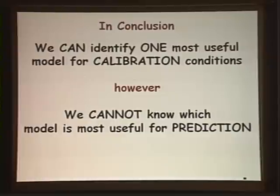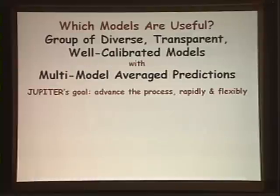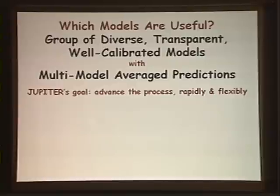To conclude, we can identify which one model can be best calibrated to our data, but that does not necessarily mean that it's the best predictor. When we ask the question of which models are useful, it really has to be a group of models that are diverse, transparent, well calibrated, and used to multi-model average the predictions. JUPITER's goal is to help us advance in this endeavor.